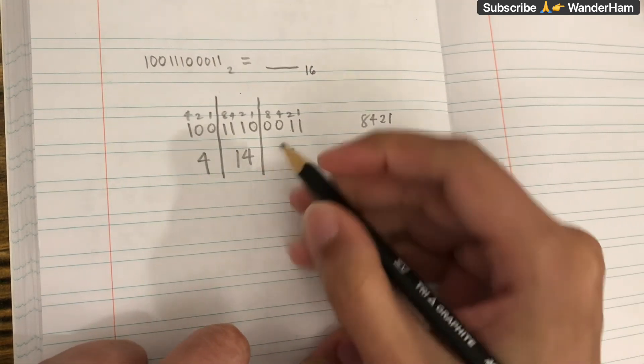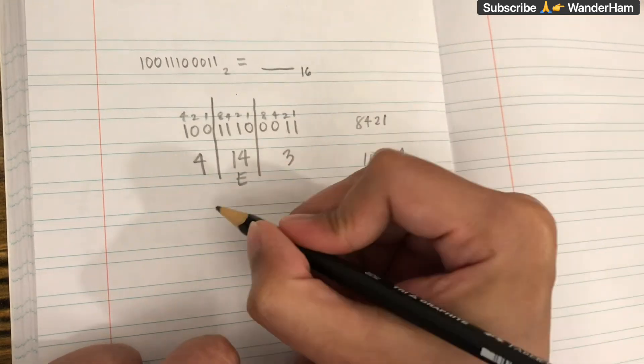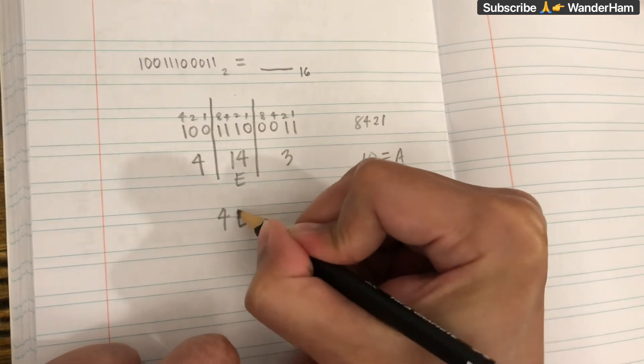So 14 is equal to E. So our answer would be 4, E, 3.